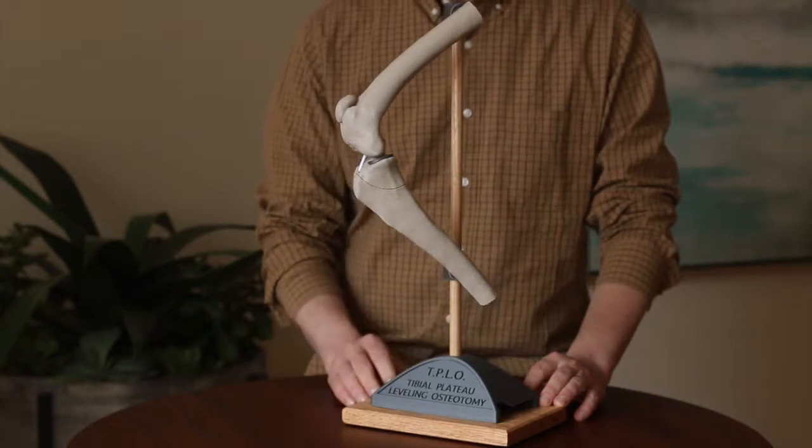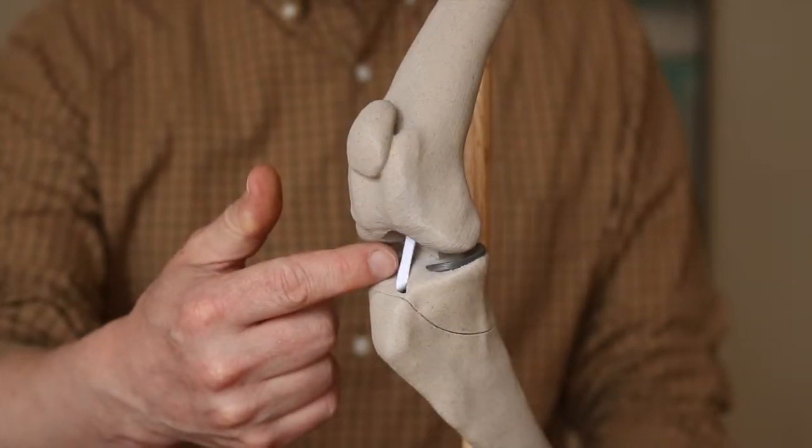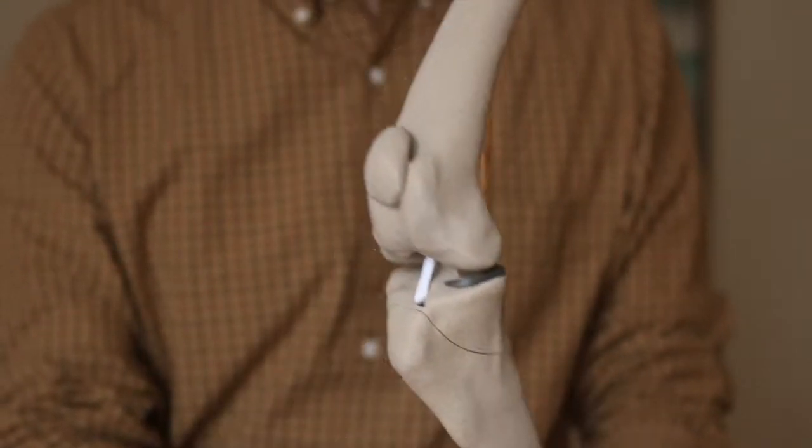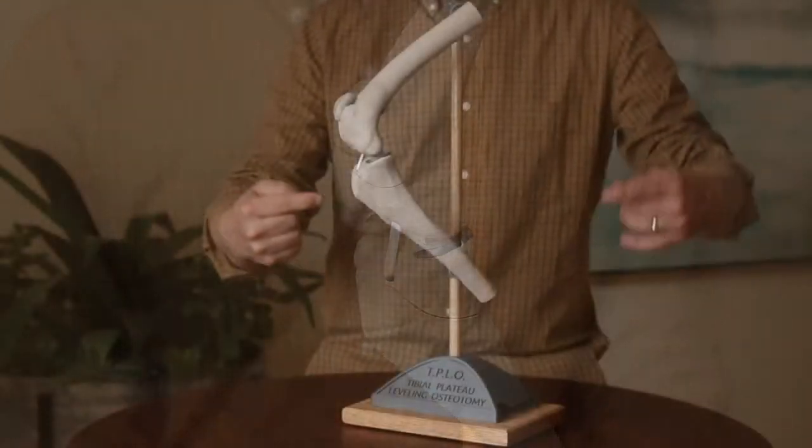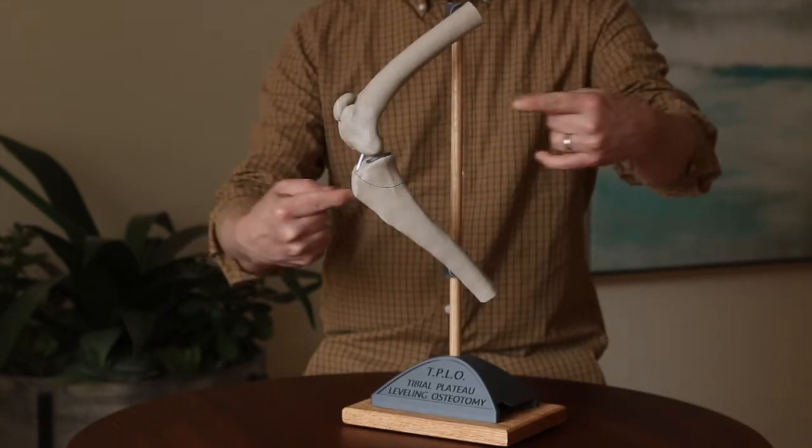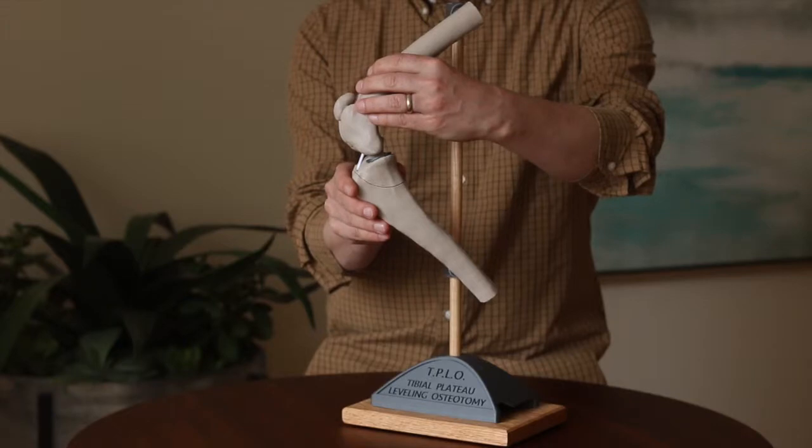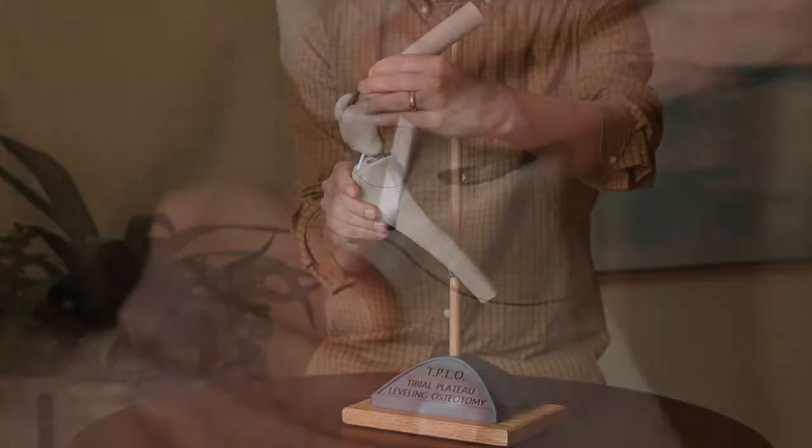This white band here represents the cranial cruciate ligament that we've been talking about. You can see it allows the knee to do its normal flexing and extending, but its main job is to prevent front-to-back shifting of the femur and tibia. So I can use my hands to try to cause this type of shifting, and you can see when I do that the ligament tenses to take the load.